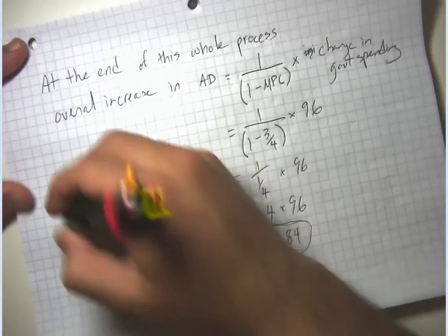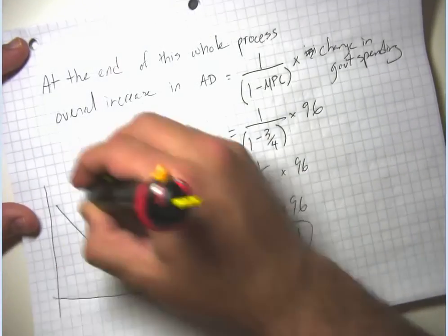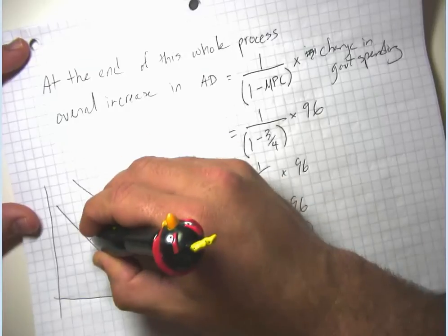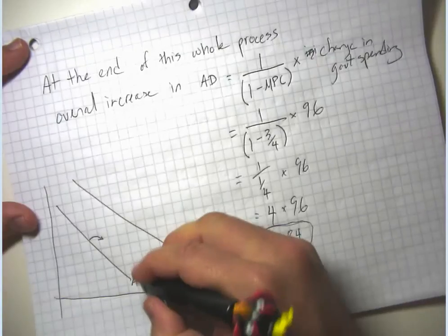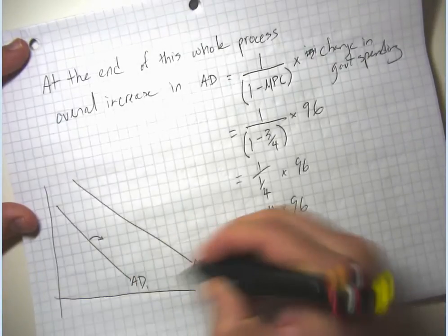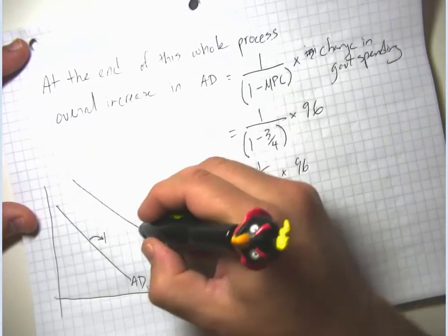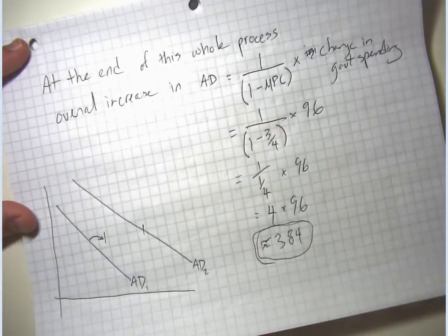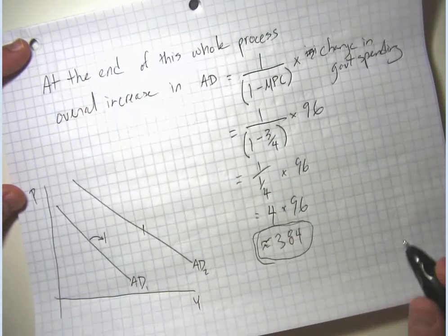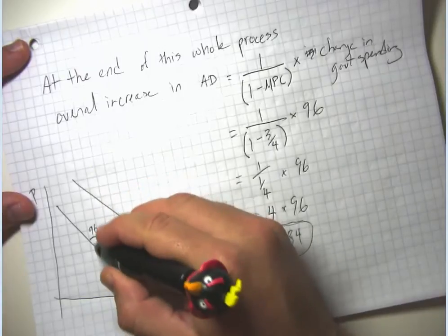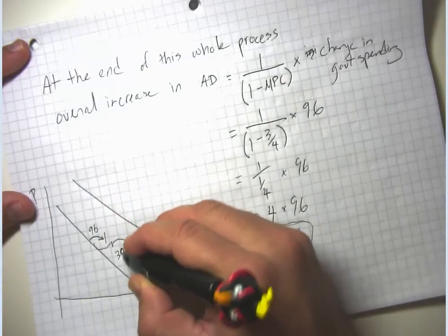If we were drawing this, we'd say this much might be the increase in G. So initially you might think the aggregate demand curve would shift right by the amount of the increase in G — but it actually shifts not left, right. It would actually increase not by 96, but by 384. That's the overall idea of the multiplier effect.